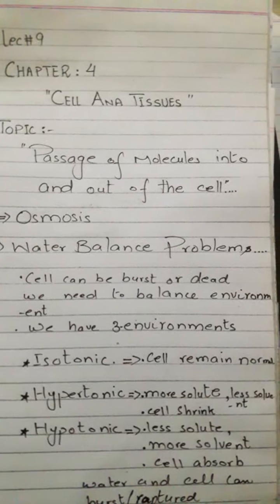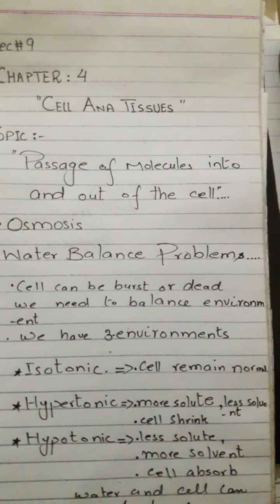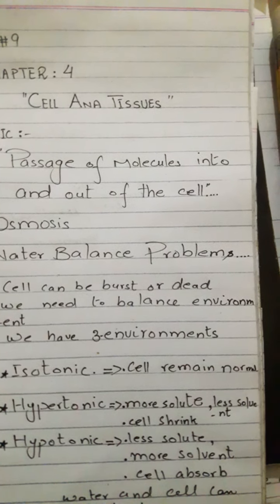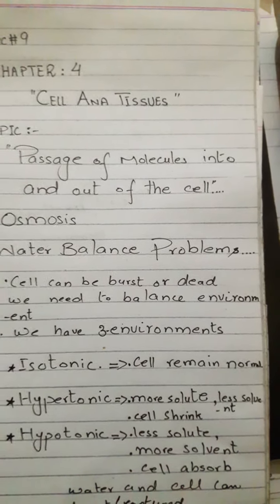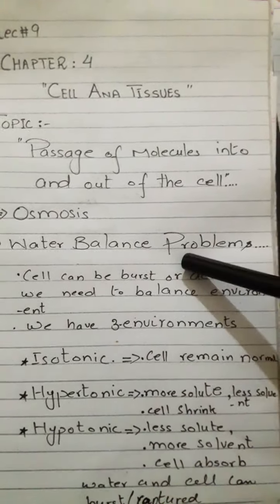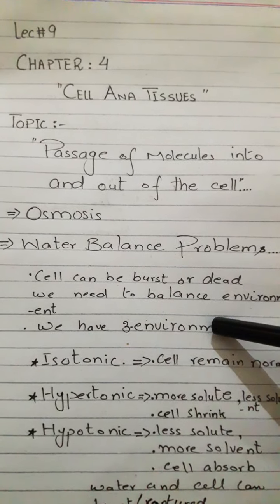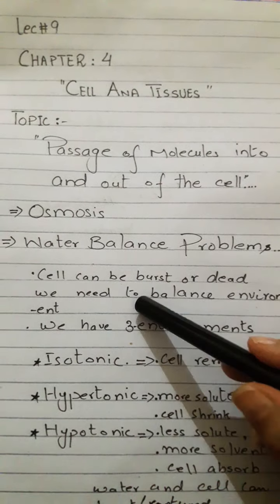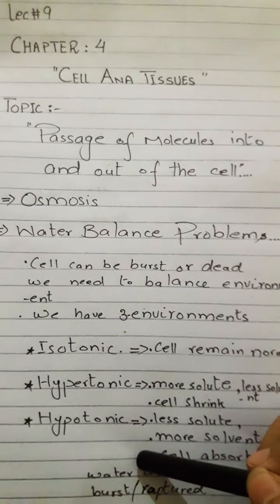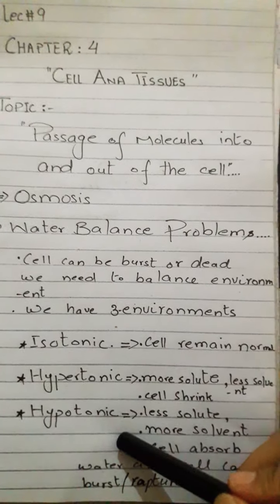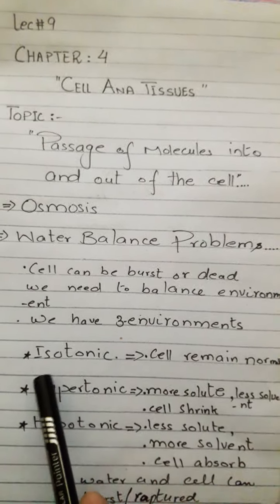As an example, we mostly use the animal red blood cell. We will look at the example of RBCs and see how the red blood cell survives in all three of these environments.